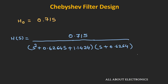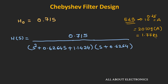Since a gain of 5 dB is specified, this corresponds to 10 to the power of 0.25, which equals 1.7783, obtained by solving 20 log(A) = 5. We multiply the transfer function expression by this factor, giving the overall transfer function for our filter design.